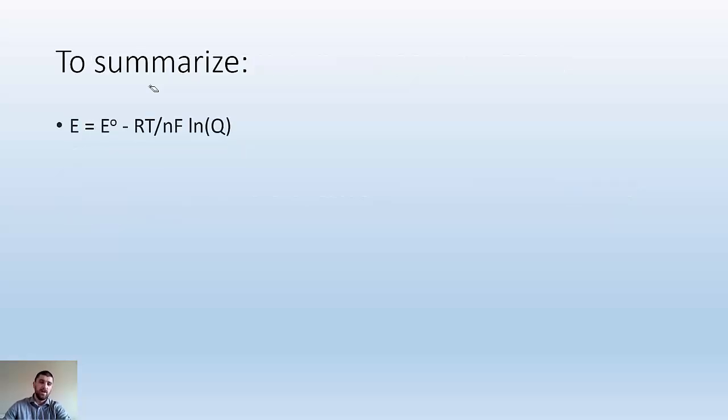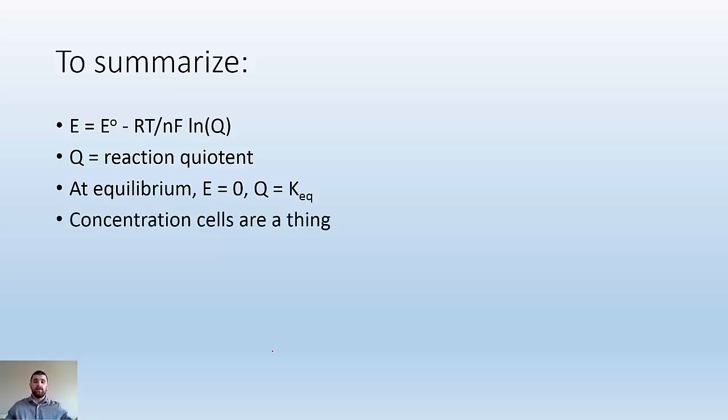To summarize: Nernst equation, know it, love it, make it your friend. Q is the reaction quotient. Don't forget it. At equilibrium, E equals 0 and Q becomes K_eq. And concentration cells are a thing, so know that they exist and understand what they are. Hope you found that helpful. See you in class.